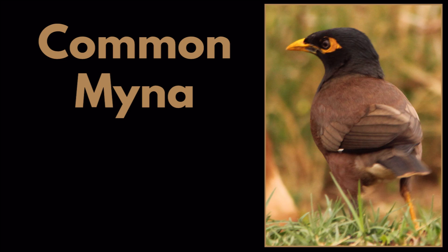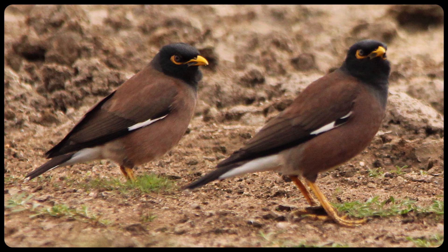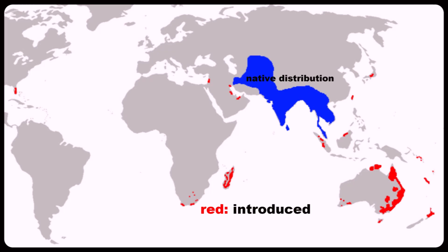The common myna was introduced in Durban in about 1900 and in Johannesburg in 1938. They were originally captive birds but were released by humans, and they can now be found across most of Southern Africa. The blue area on the map shows their native distribution and the red area shows where they were introduced around the world.